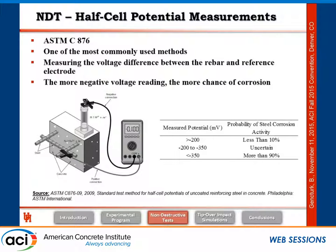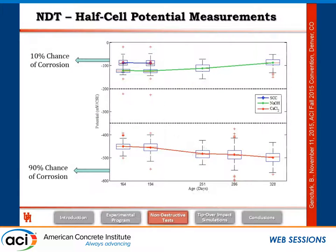For non-destructive testing, we performed half-cell potential measurements following ASTM C876, measuring the potential between the rebar and a copper sulfate reference electrode. A lower potential indicates a higher probability of steel corrosion. Results show the control cask and NaOH mix have relatively stable, low corrosion probability over time. However, the calcium chloride cask shows more than 90% probability of corrosion, with potential decreasing over time — confirming active corrosion due to the added calcium chloride.